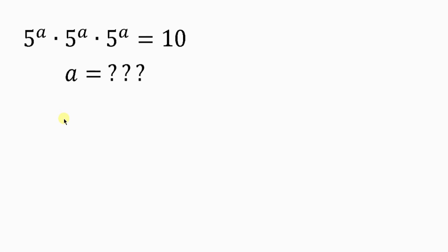What's going on everybody? Welcome back to my YouTube channel. Now look at this nice and beautiful Olympia question we have on the board that we're going to be solving. The question says: find the value of A for which 5 to the A times 5 to the A times 5 to the A is equal to 10.